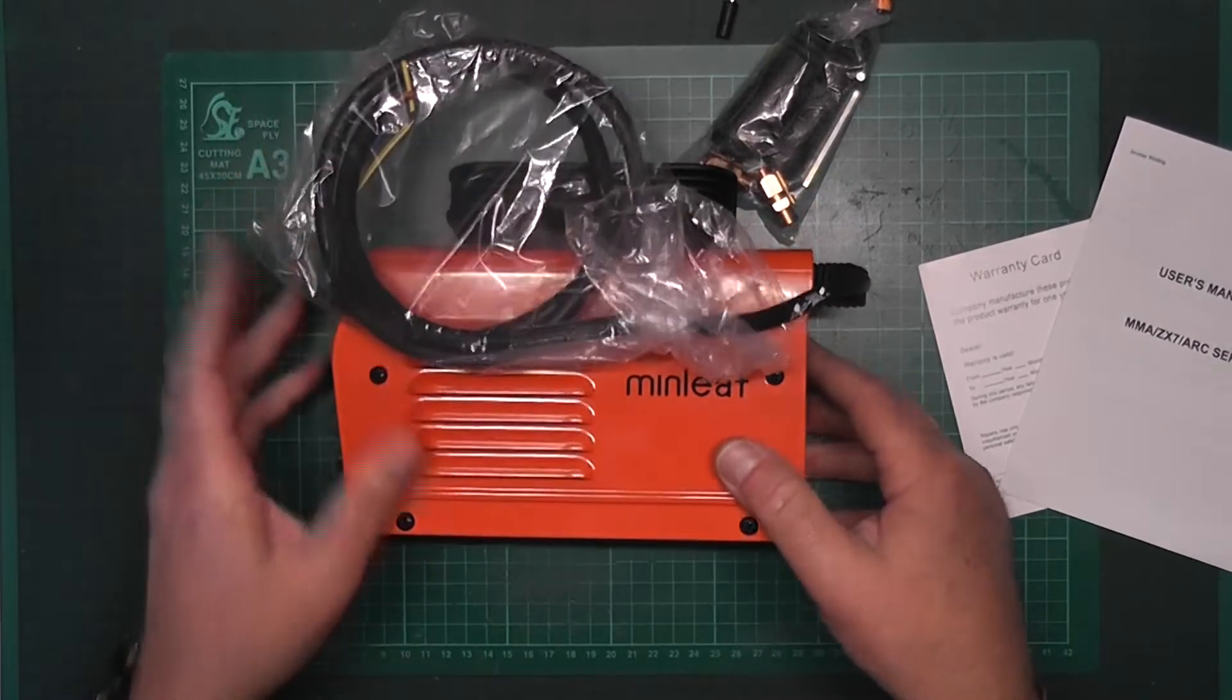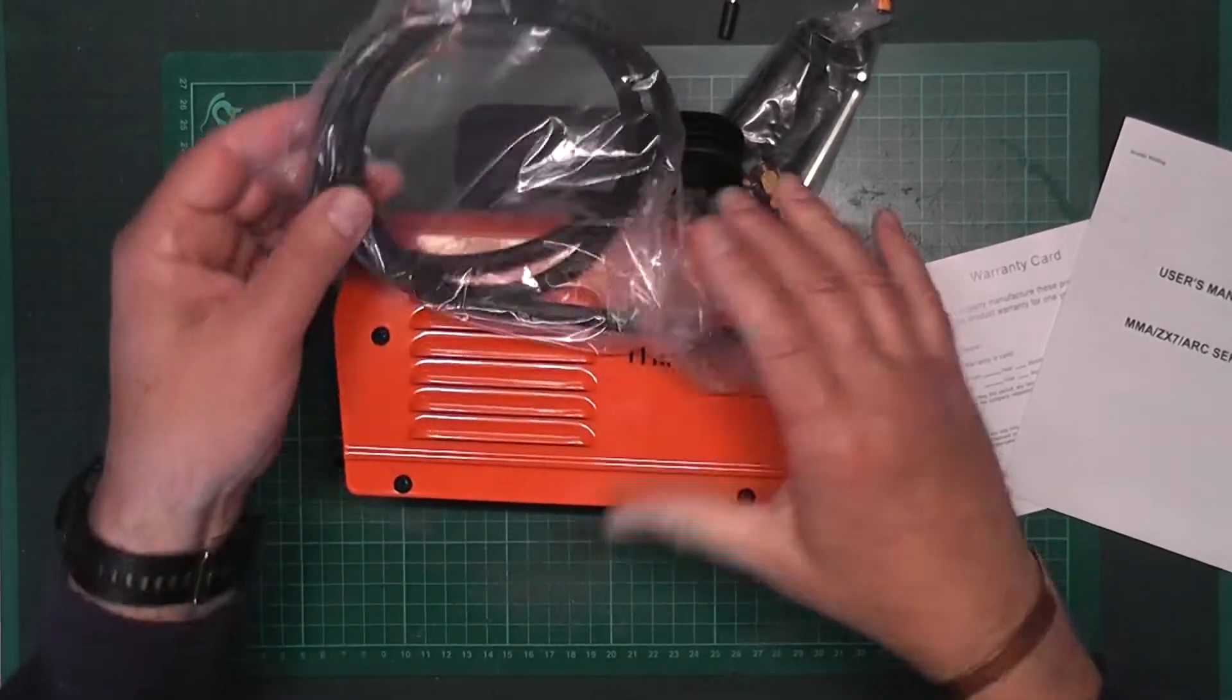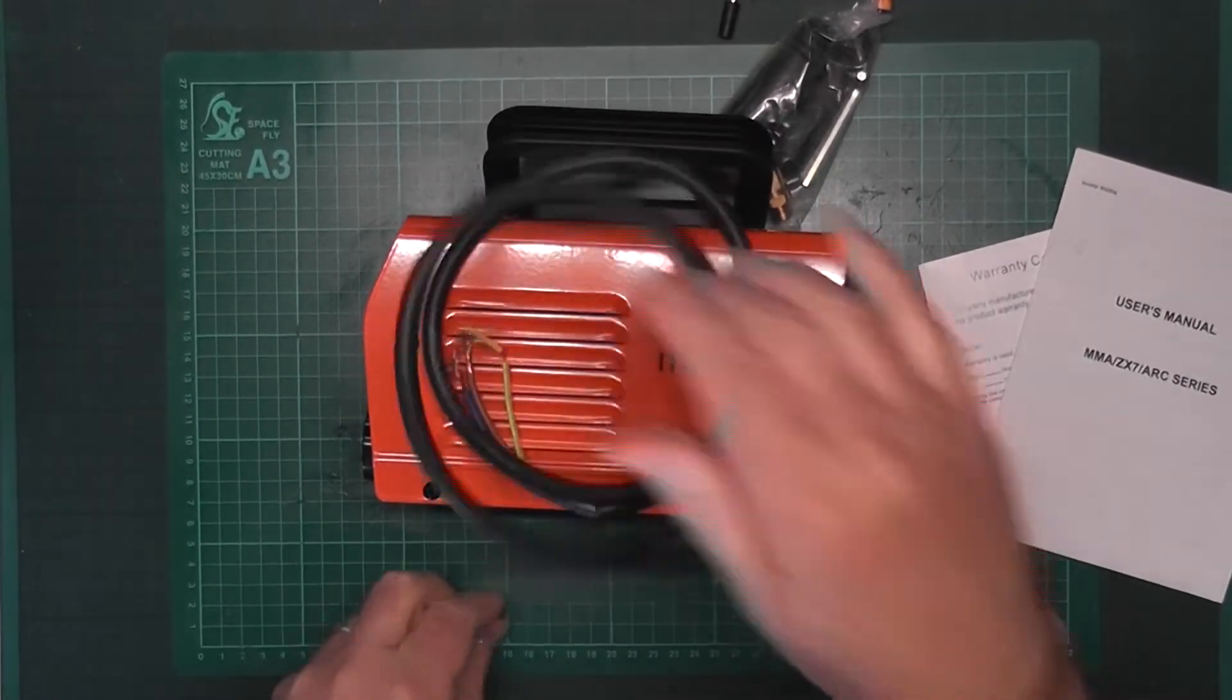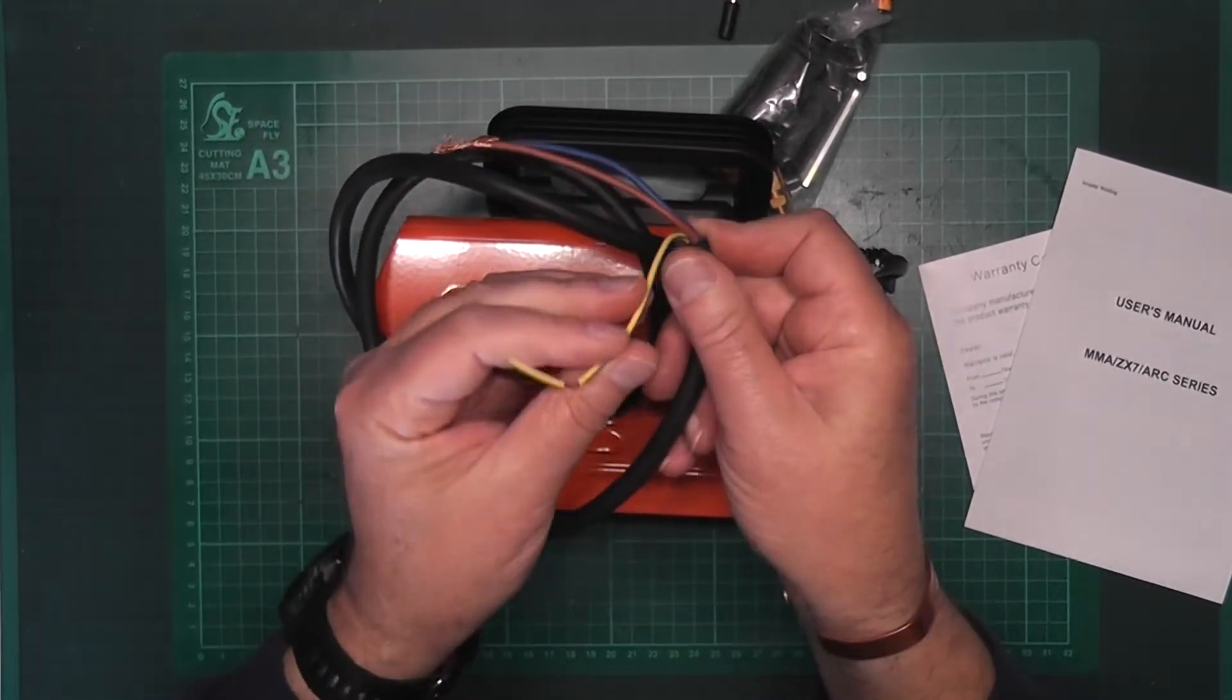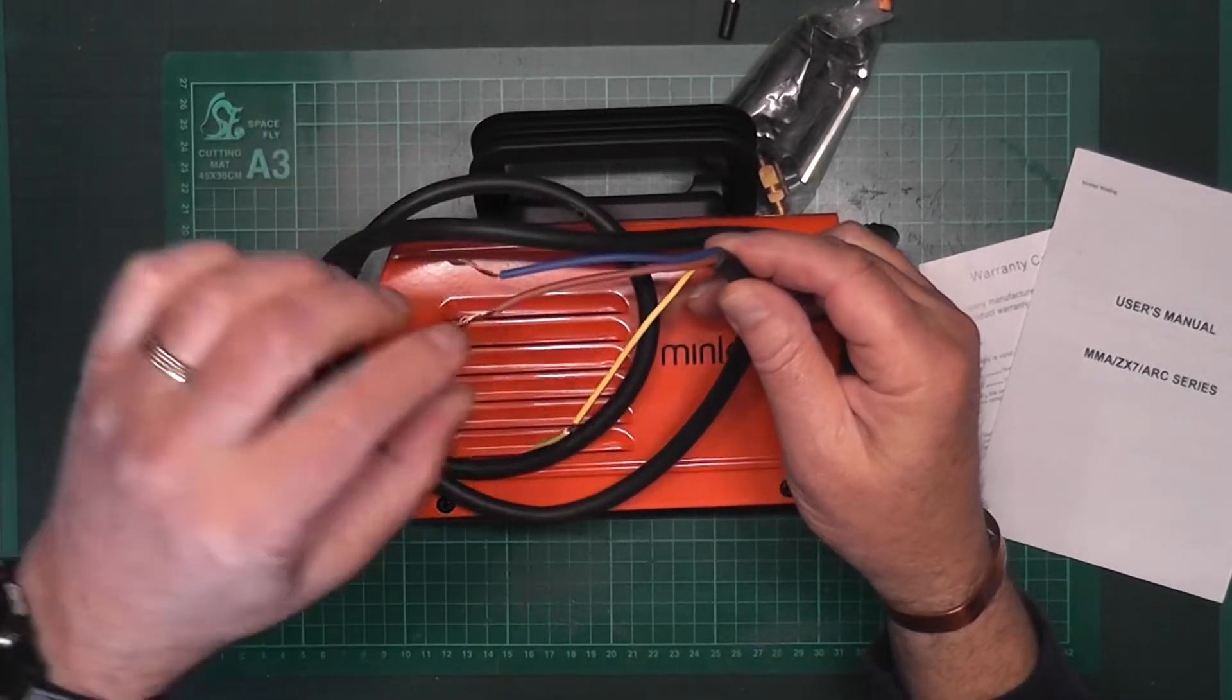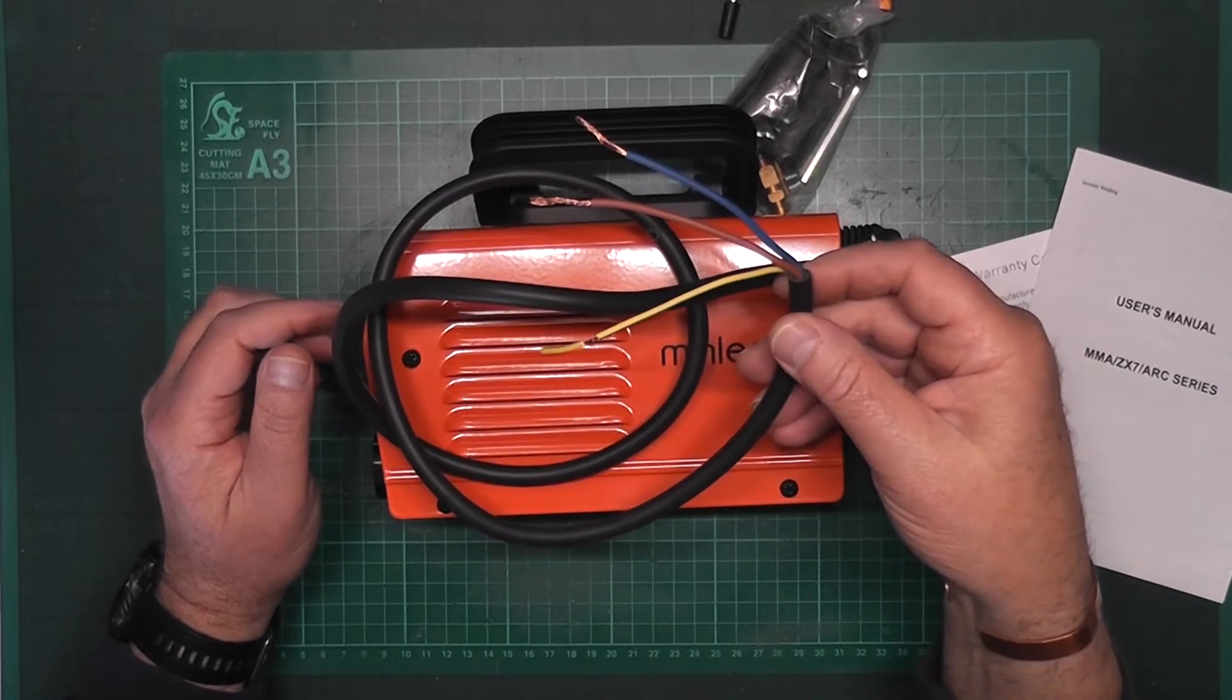Now this model is a 220 volt and it's three pin or three wire. Now it's very important with these that they must have ground. If your one comes with a two pin, just make sure you can ground it. So what we need now is we'll need to put a plug on that and then we can switch it on.